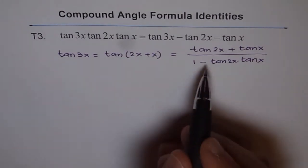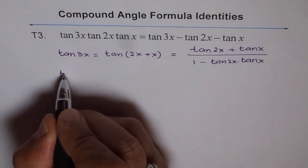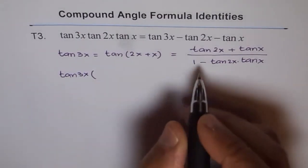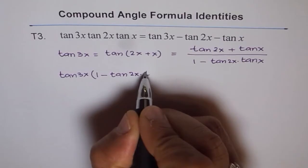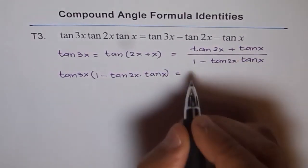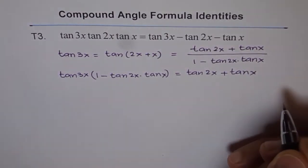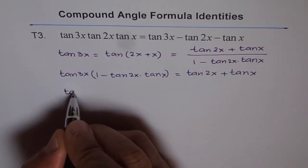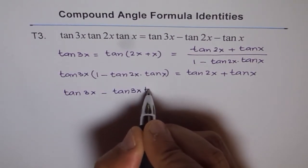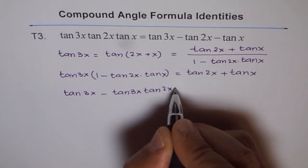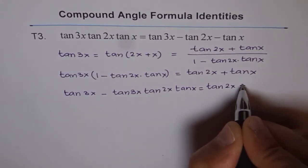Now what we can do is we can cross multiply. So that means we'll do tan 3x times this number. So we'll say tan 3x times the denominator, which is here, 1 minus tan 2x tan x equals to the numerator, which is tan 2x plus tan x. Now we can open the bracket and we get tan 3x minus tan 3x tan 2x tan x equals to tan 2x plus tan x.